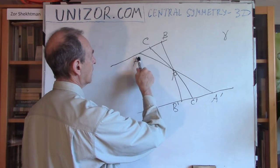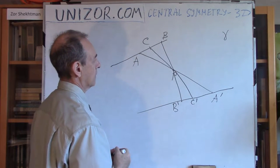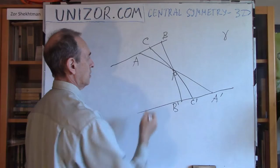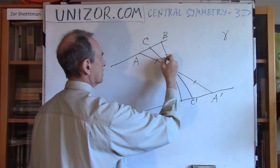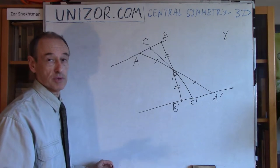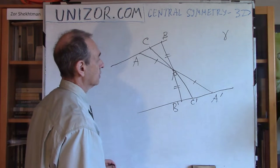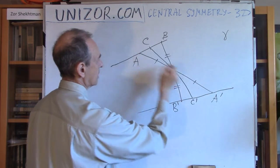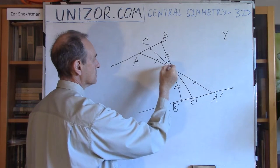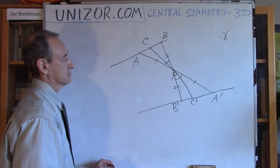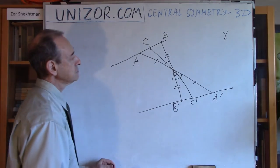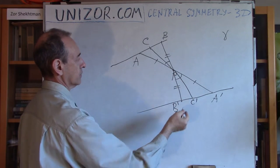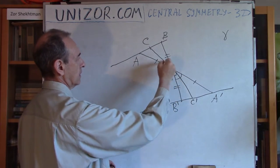Let's consider triangle ABP. It is congruent to triangle A prime P B prime. Why? Because AP equals PA prime and BP equals PB prime by construction — that's how we constructed the symmetrical points, by connecting and extending by the same length. And the angles at P are vertical angles, because these are straight lines. So triangles ABP and A prime P B prime are congruent by Side-Angle-Side.